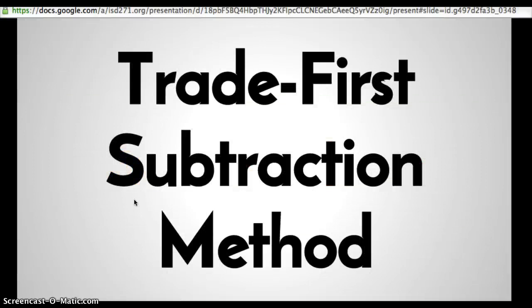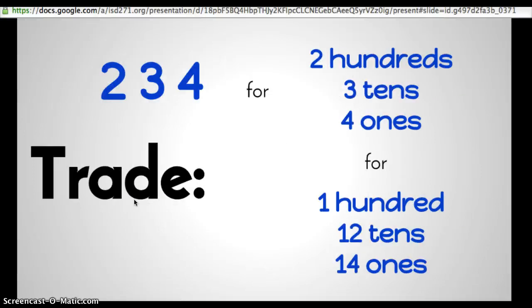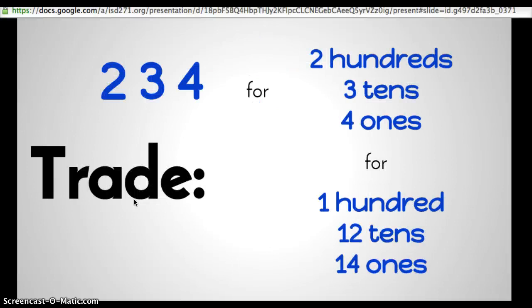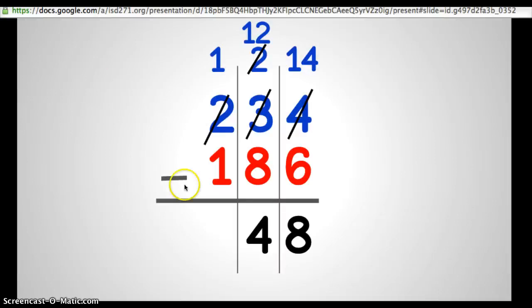Now, that's the trade-first subtraction method, but let's go back to a couple things we mentioned earlier. First of all, we said that you could take 234 and trade it for two hundreds, three tens, and four ones. Most of you agreed right away with that, but I'm guessing when I said 100, 12 tens, and 14 ones, you had a little hard time seeing it. So let's take a look at what this example looks like again. We had 100, 12 tens, 14 ones, 100, 12, 10, 14 ones traded out for this number. But let's take one more close look at how that happens.